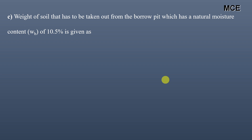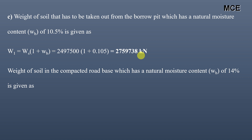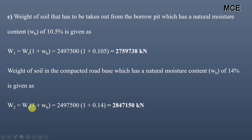The weight of soil to take out from the borrow pit area at 10.5% moisture content is: weight of solids × (1 + water content of borrow pit soil) = 24,975,000 × 1.105 = 27,597,375 kN. Similarly, the weight of soil in the compacted road base at 14% moisture content is: 24,975,000 × 1.14 = 28,471,500 kN. This completes all three parts of the problem.